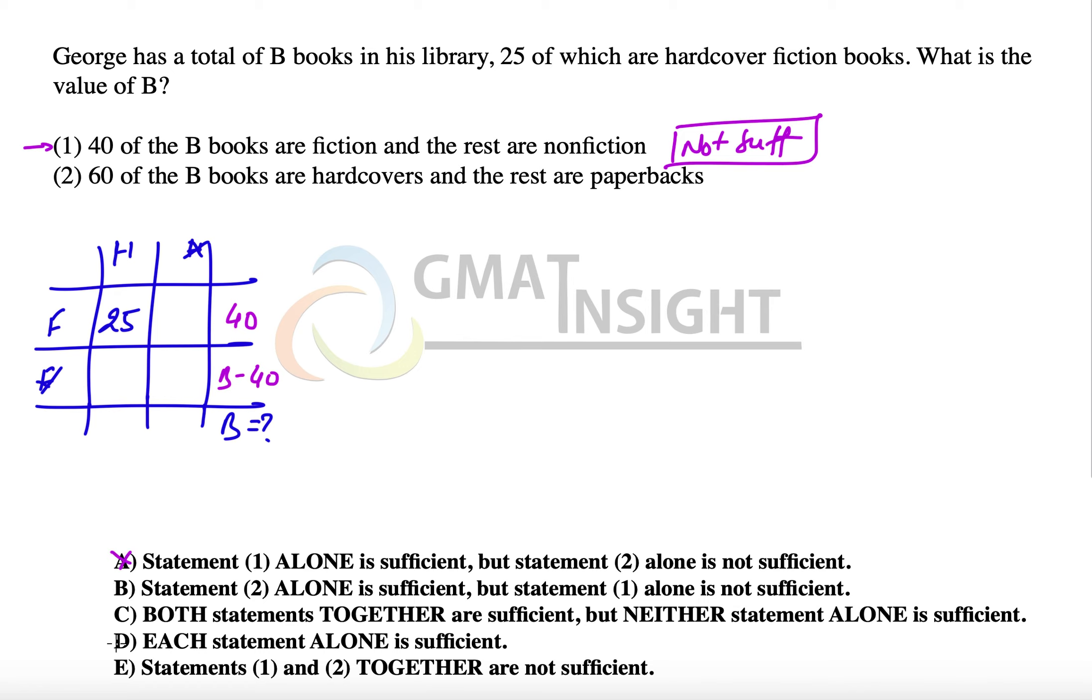And here we can eliminate options A and B. Now the second statement here says that 60% of the B books are hardcover, so 60 are hardcover and the rest are paperback. That means B minus 60 which are paperback. But once again we don't know anything about the value of B. Therefore, the second statement alone as well is not sufficient.